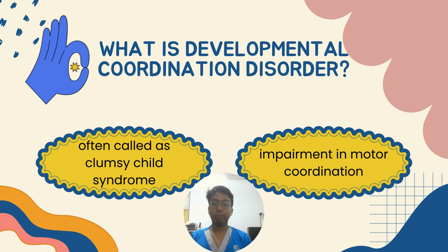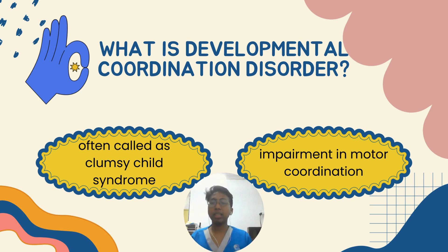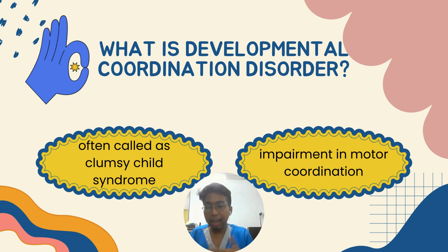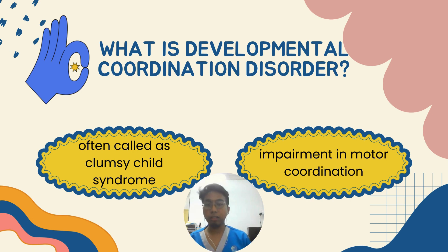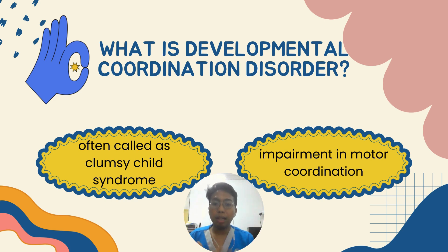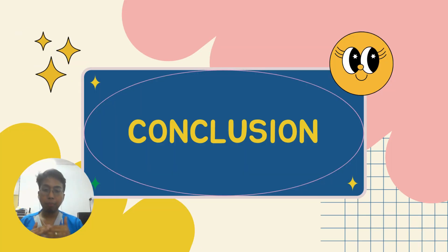Being clumsy doesn't automatically mean a child has developmental coordination disorder. This disorder specifically focuses on impairment in motor coordination — both fine motor skills and gross motor skills — meaning affected children can't perform tasks at school such as writing or kicking a ball. Because of this, they build frustration toward completing tasks and may think they are incapable, which can cause them to become disruptive.